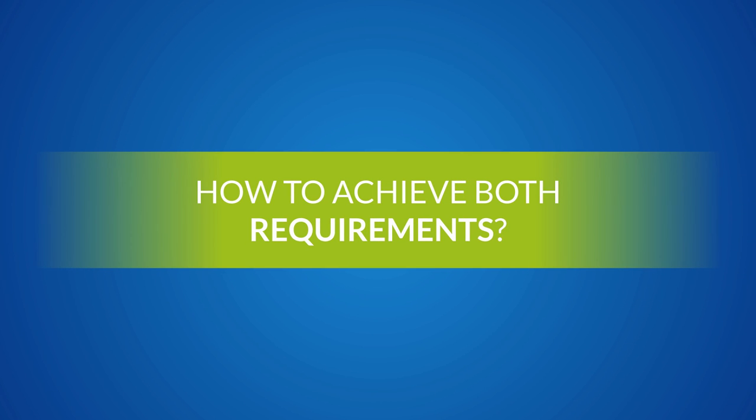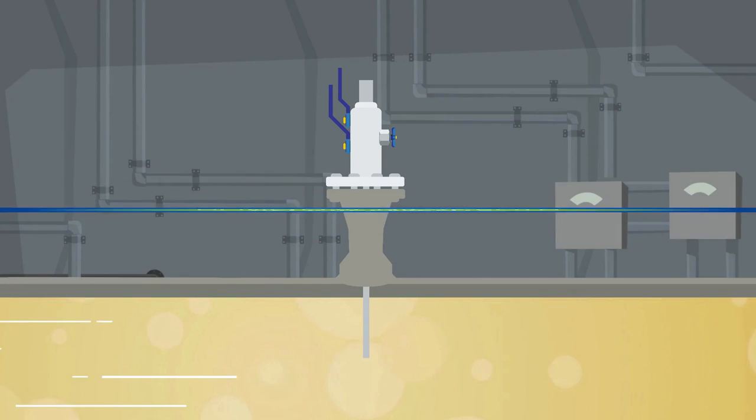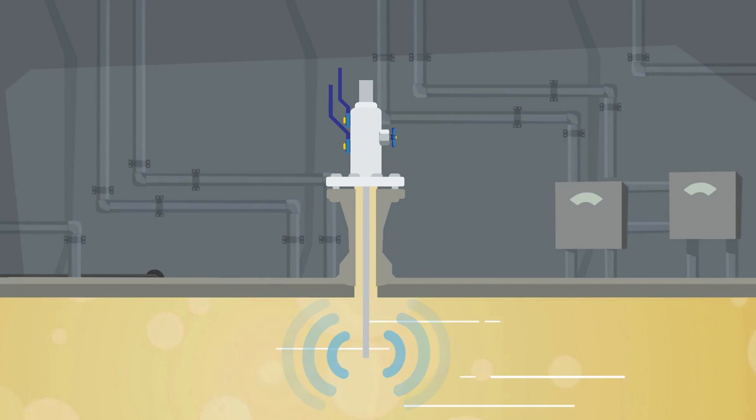How to achieve both requirements? To fulfill both purposes, the support collar needs to be fitted tightly within the flange. Any gap between the support collar and the flange wall gives space for vibration of the probe, which could lead to the break of the probe.